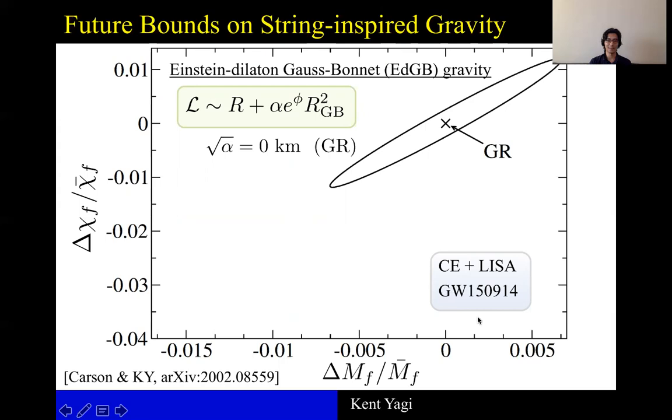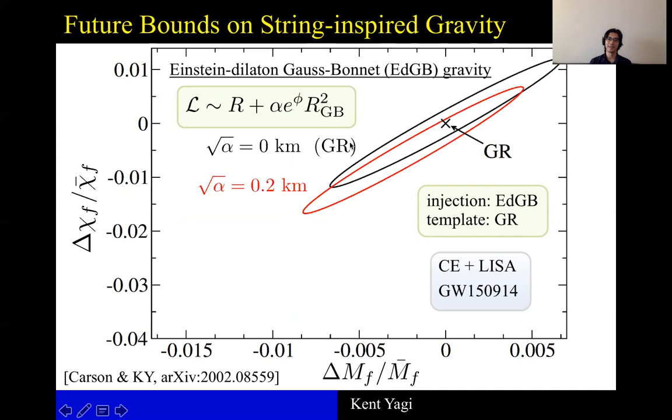Now, imagine that instead EdGB is the correct theory in reality, but we still use GR as a template waveform. Then, for example, if we inject square root of alpha to be 0.2 kilometers, then the error ellipse now shifts to this red one, which still contains the GR origin here.